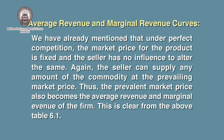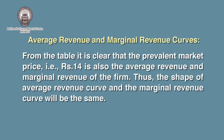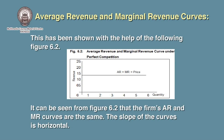The seller can supply any amount at the prevailing market price. Thus, the shape of the average revenue curve and the marginal revenue curve will be the same. This has been shown with Figure 6.2. It can be seen from Figure 6.2 that the firm's AR and MR curves are the same, and the slope of the curve is horizontal.